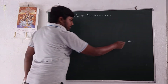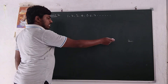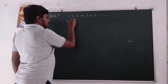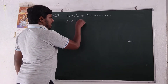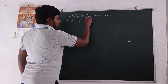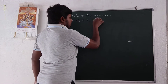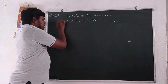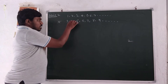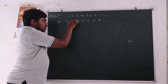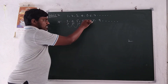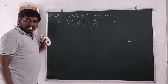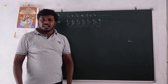Now take one fixed number, say 2, and add it to each term. So 1 plus 2 is 3, 2 plus 2 is 4, 3 plus 2 is 5, 4 plus 2 is 6, 5 plus 2 is 7, 6 plus 2 is 8, 7 plus 2 is 9. We get another sequence: 3, 4, 5, 6, 7, 8, 9. Check differences: 4 minus 3 is 1, 5 minus 4 is 1, 6 minus 5 is 1, 7 minus 6 is 1, 8 minus 7 is 1, 9 minus 8 is 1.